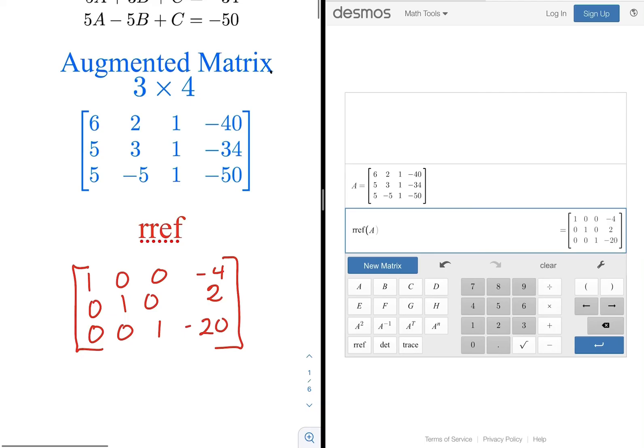And that's supposed to happen. You're supposed to get that diagonal set of 1's and everything else zeroed out. And so this is 1A plus 0B plus 0C equals negative 4. So A equals negative 4. And you saw me do this today.